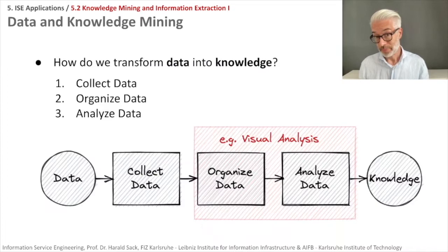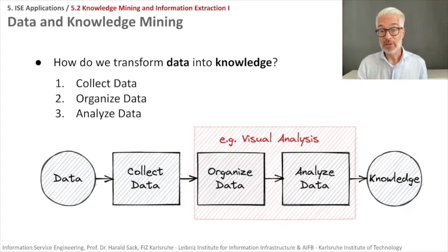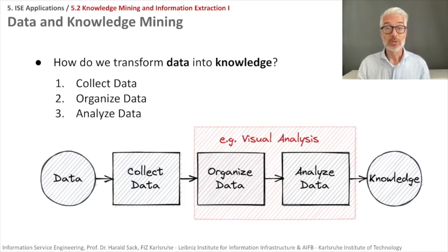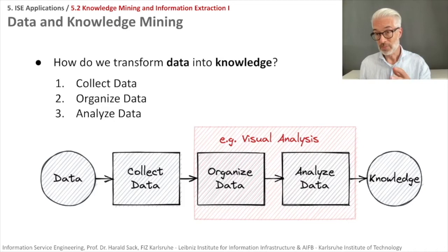The process to transform data into knowledge is usually referred to as data or knowledge mining. It usually starts with collecting your data, then organizing it, and after organizing you are able to analyze it to extract knowledge. The first step we want to do here is some kind of visual analysis: summarizing and organizing your data in a specific way, then analyzing it visually — making a visualization, a picture of it — and then finding out interesting things.